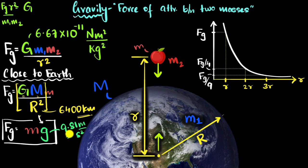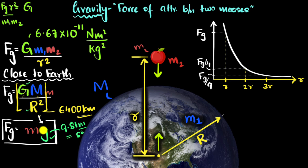We can also measure it using a pendulum. We knew the value of the radius of the Earth — that was calculated a long time ago, very interestingly using shadows. And then, once we figured out the value of capital G, we could just equate them and figure out the mass of the Earth. That's how we actually figured out the mass of the Earth.